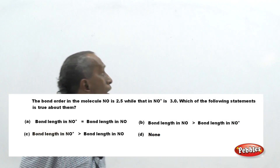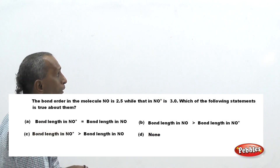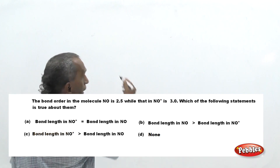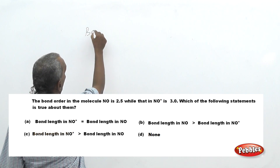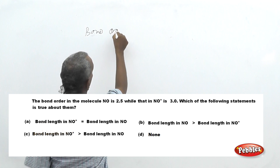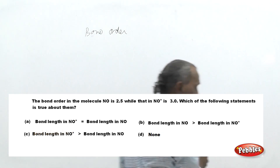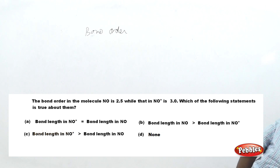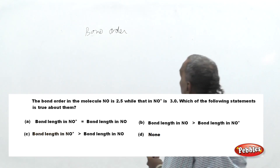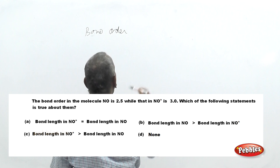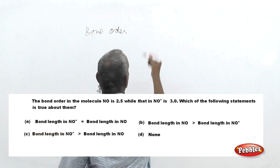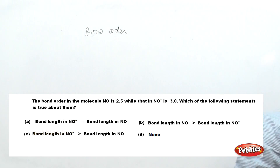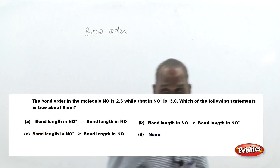This question is based on the correlation between bond order and bond length. Bond order is the number of covalent bonds present in a system, whereas bond length is the distance between the participating atoms in the covalent linkage. This question explores the difference and correlation between bond order and bond length.